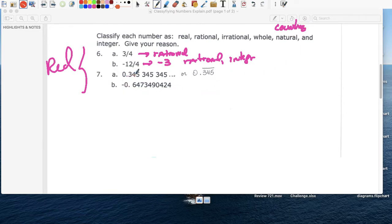0.345, 345, 345, or 0.345 bar notation, it's a repeating decimal. And if it's a repeating decimal, we can write it in this format, right? As a ratio of two integers, and if we can write it as a ratio of two integers, it's a rational number. It's not whole, it's not natural, it's not an integer.